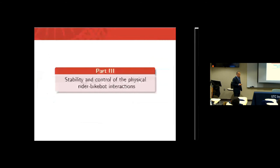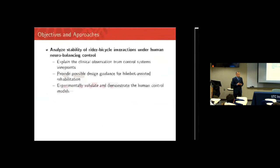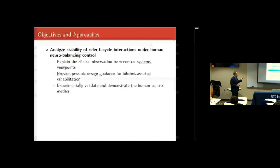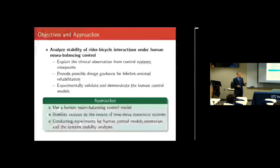For the third part — stability analysis — we observed the clinical phenomenon of Parkinson's patients riding bicycles, and we want to provide an engineering insight into why. Our goal is also to design a robot device to help humans or tune their balance capabilities. The approach is to model human neural control. In the previous part, we compared experiments with the autonomous controller without modeling human control — now we explicitly model the neuro-control behavior.